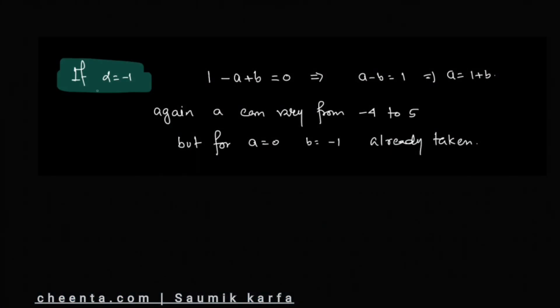Now consider the third case where α = -1. This gives us 1 - a + b = 0, which implies a - b = 1, so a = 1 + b. Again we can understand a should vary from -4 to 5, because if a is -5, b would be -6, which is not in set x. We get 10 possible values, but when a = 0, b = -1, which is already taken. So we get 9 different new values again.